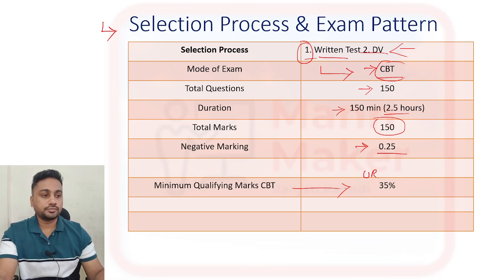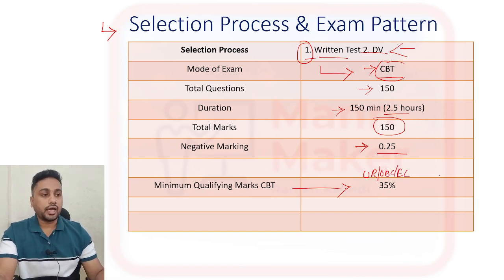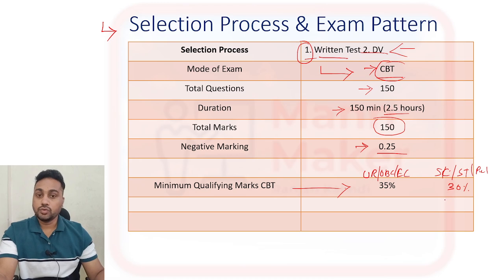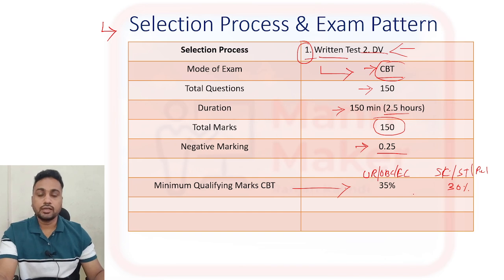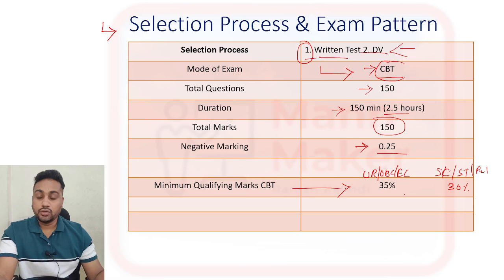For qualifying this exam, OBC and EWS category candidates need to get at least 35%, and SC, ST, and PWBD candidates need at least 30%. Note that the qualifying marks and the cut-off marks are different — the cut-off to actually get the job will usually be higher.